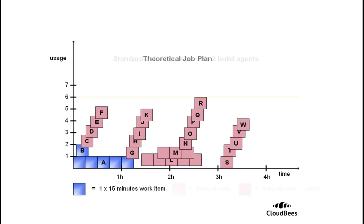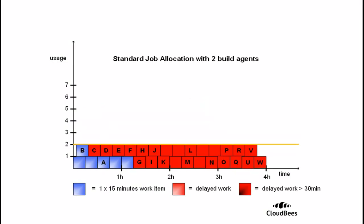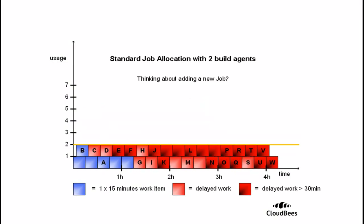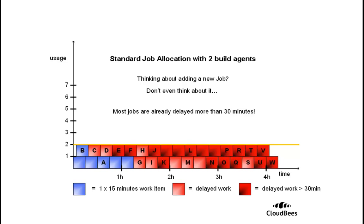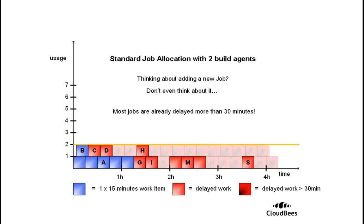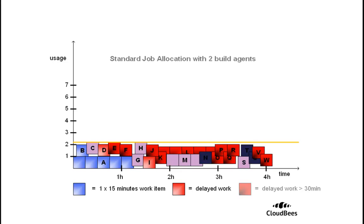But unfortunately, this is just theory. If you were to apply the theoretical job plan to a real Hudson environment running two build agents, only two jobs would execute in decent conditions, and all others would end up being delayed, most of them by more than 30 minutes.